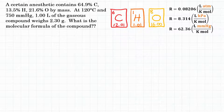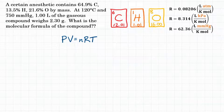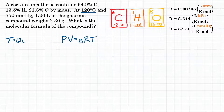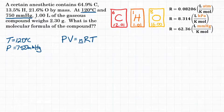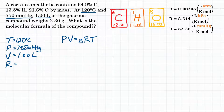First, let's use the ideal gas law, which is PV = nRT. We're going to use this equation to solve for n, which is moles. From the problem, we have a temperature of 120 degrees Celsius, a pressure of 750 mmHg, and a volume of 1.00 liters. For our R value, we will pick the one we need. Let's rearrange the equation to isolate for n.